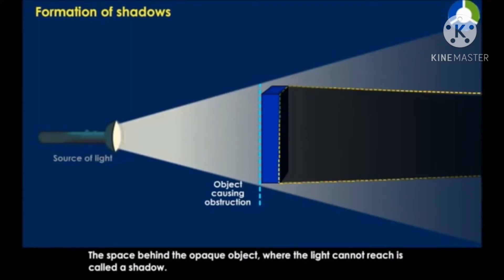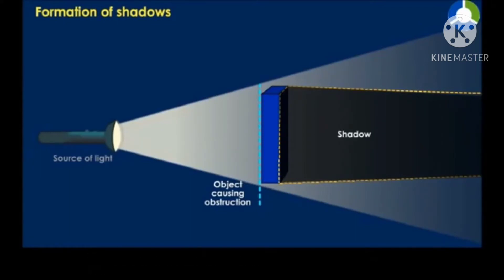The space behind the opaque object where the light cannot reach is called a shadow. Thus, shadows are formed when light is stopped by objects.